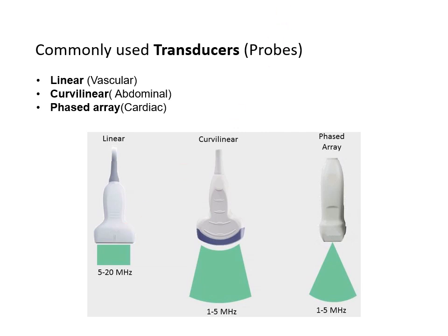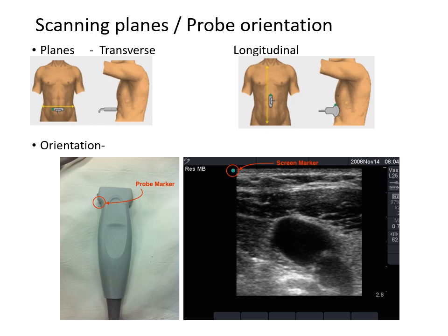Moving on to probe orientation and scanning planes: scanning planes in ultrasound are similar to X-ray — it has two planes, AP or lateral, but here we call them transverse and longitudinal. Transverse means you are transverse to the area of interest; longitudinal means you are parallel to it. Each probe has a dot or marker. When scanning in transverse plane, the dot should be towards the right of the patient. When scanning in longitudinal section, the dot should be towards the head.